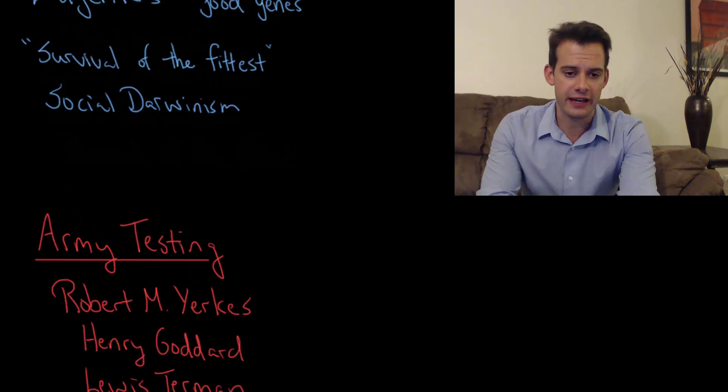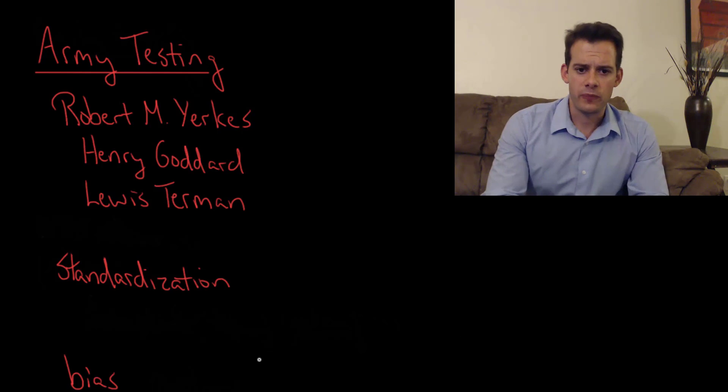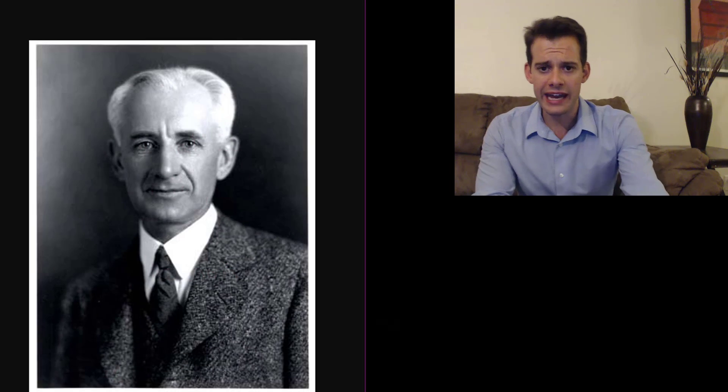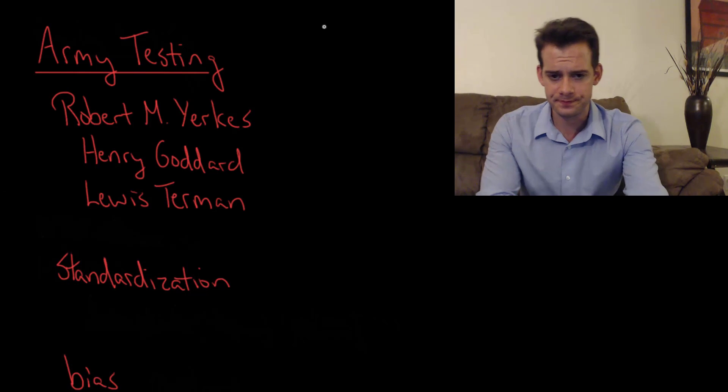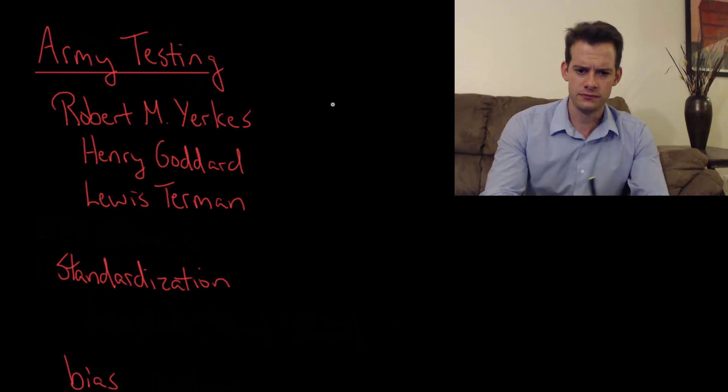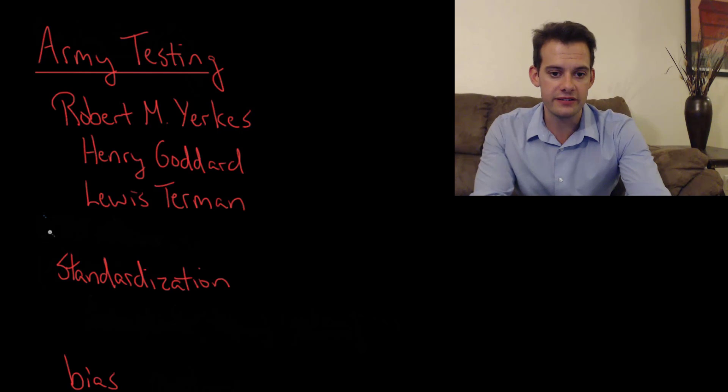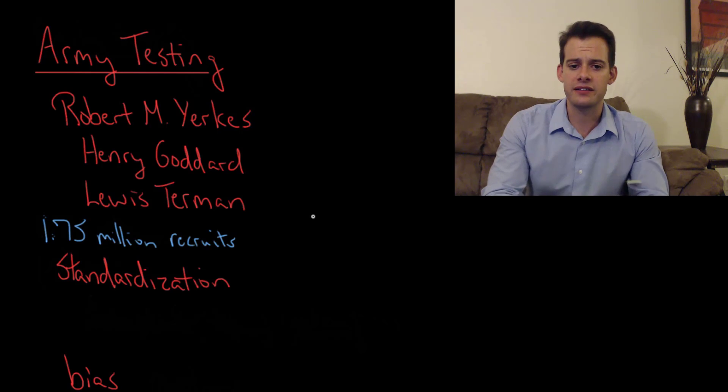So let's look at some specific intelligence tests. A man named Robert Yerkes formed a committee, and here's a picture of Yerkes here. He formed a committee including Henry Goddard and Lewis Terman to create intelligence tests for the military. And they created two different tests, the Army Alpha test, which was for literate soldiers, and the Army Beta test, which was for illiterate soldiers. During World War I, they administered these tests to 1.75 million U.S. Army recruits. And the purpose of the tests was to place soldiers in ranks and to determine which soldiers were suitable for officer training.